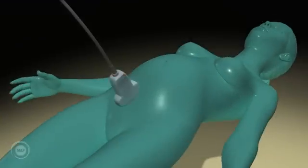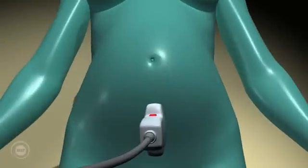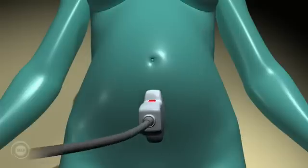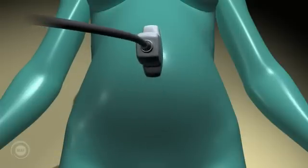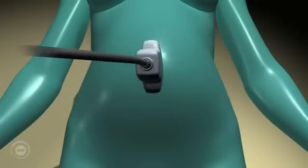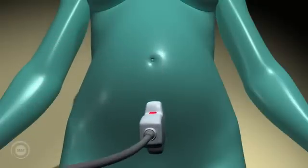Longitudinal. When initiating a scan, one always starts with a probe over the pubic bone of the mother in a longitudinal plane. This means the long axis of the probe is lined up with the long axis of the mother. We then scan systematically up and down her abdomen, taking slices lengthways.